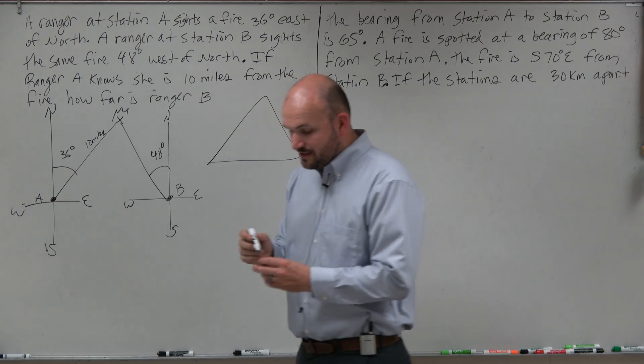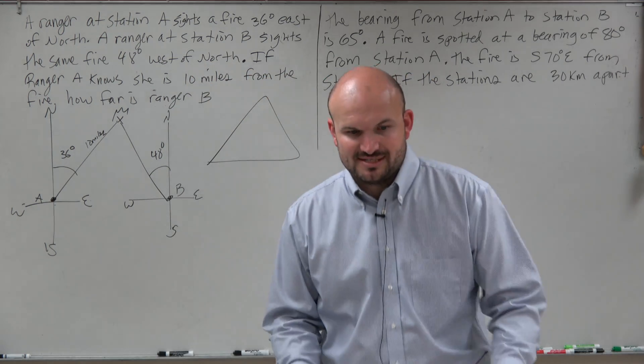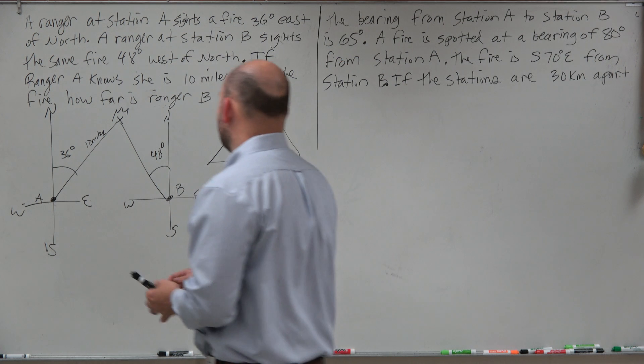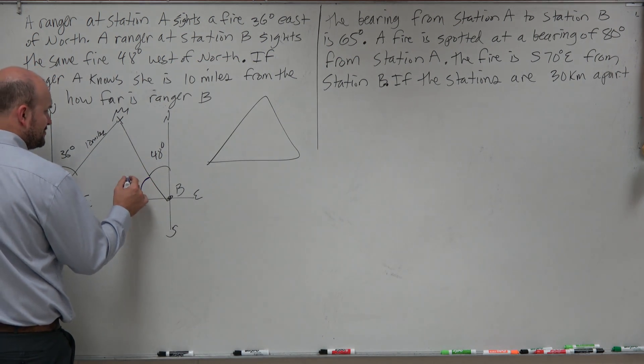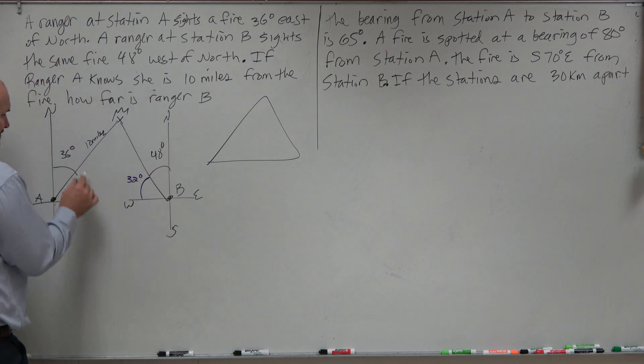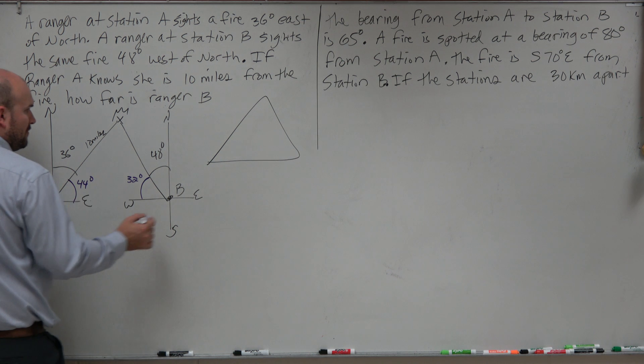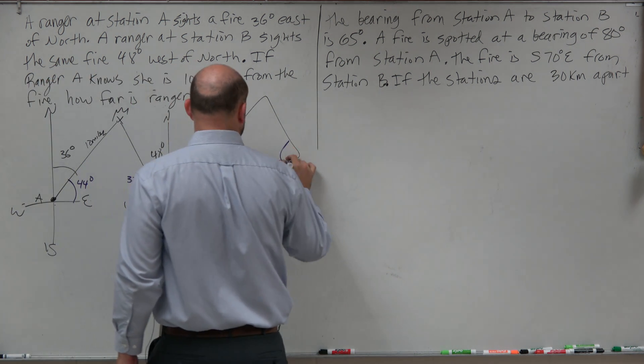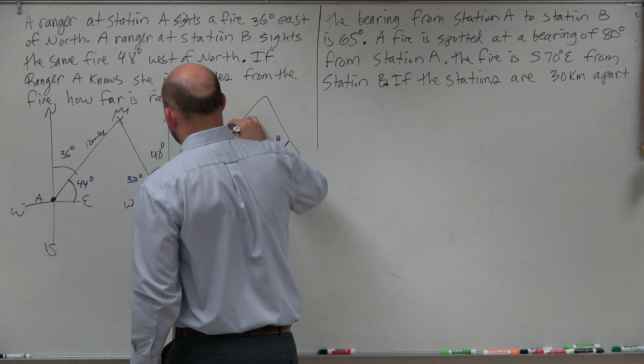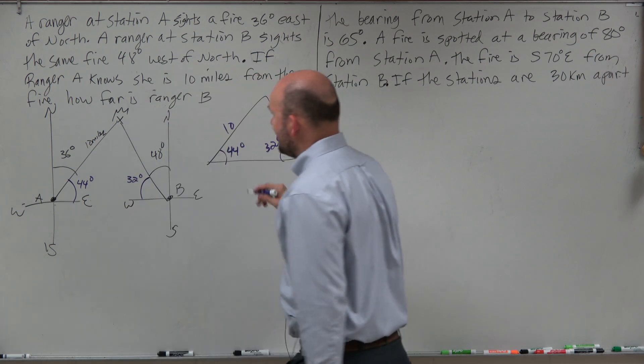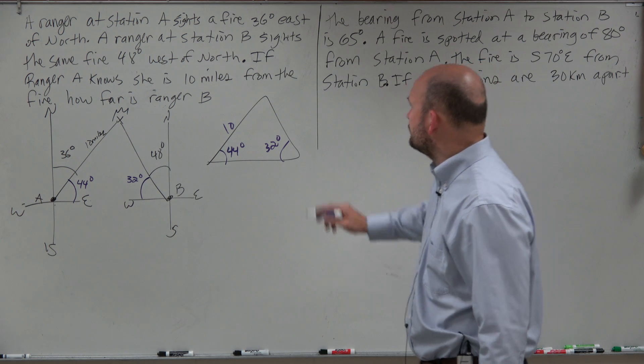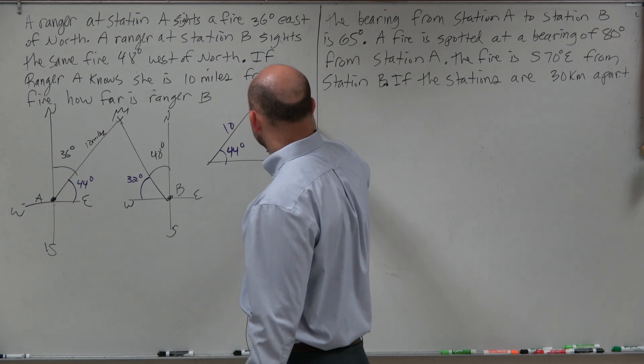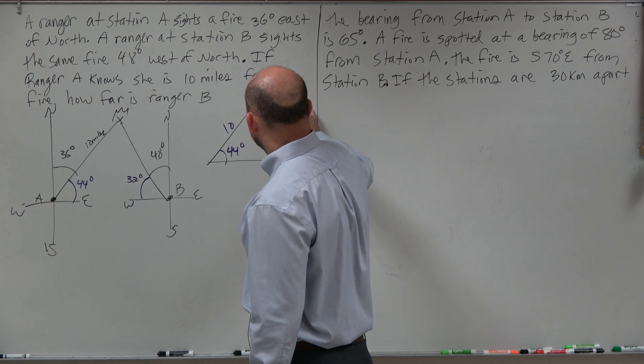The important thing is we don't really have any angles inside the triangle, so we have to use our understanding of complementary angles. If this angle is 48, that means this angle right here is going to be 32 degrees. If this angle right here is 36 degrees, that means this angle right here is 44 degrees. We have 44 degrees, 32 degrees, here is 10 miles, and we want to figure out how far is ranger B.